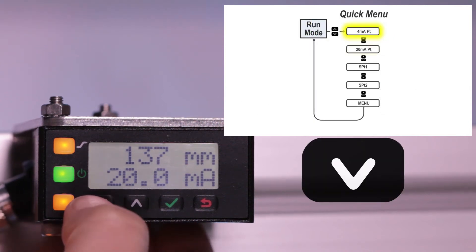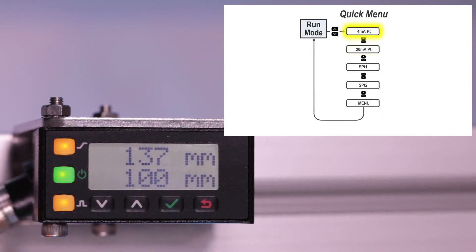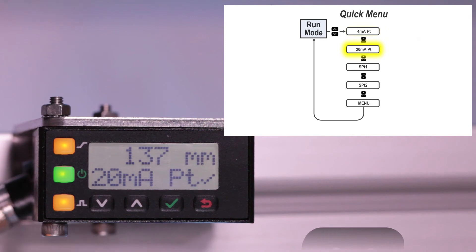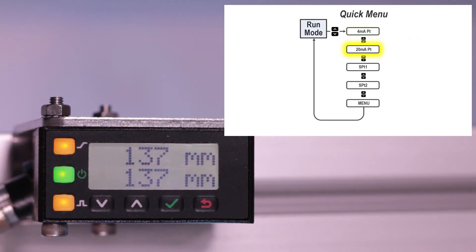Click down. The top line continues to display the current distance measurement. The bottom line of the display now shows us the current setting for the 4mA point or the 20mA point. This verifies the 20mA point was taught at 137mm.